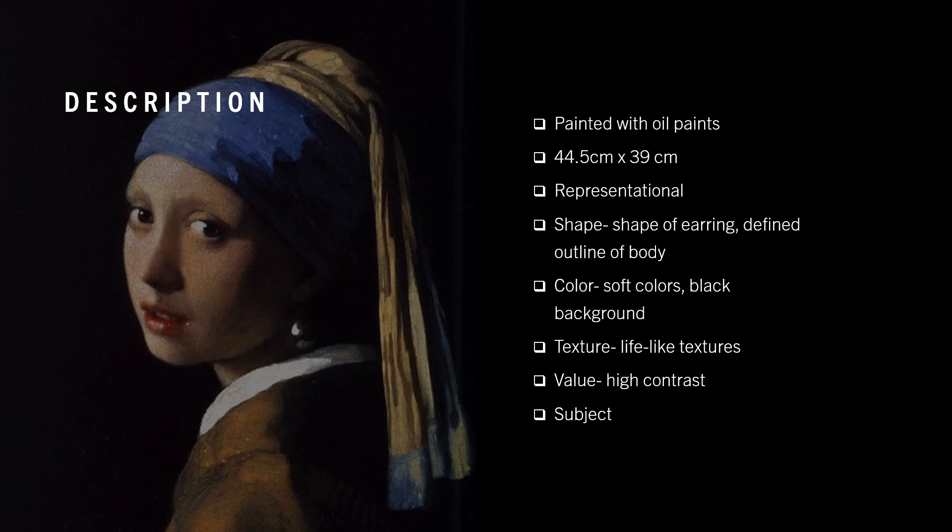The organic shape of the girl's figure is also emphasized by the black background, giving her a distinct outline. The colors of this piece are relatively soft, with the primary colors pictured being the pastel yellow and the blue of her clothes, her light skin, and her soft red lips. Despite these colors remaining soft, the pitch black color of the background contrasts these colors to bring the eye directly towards the subject.